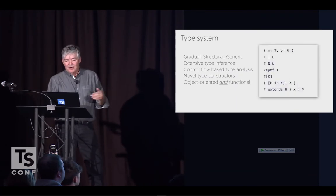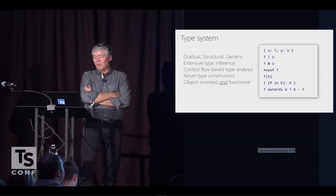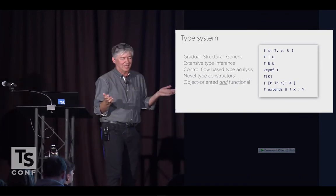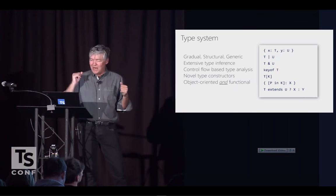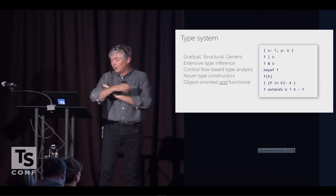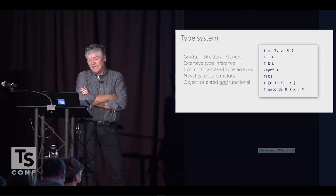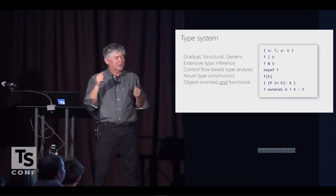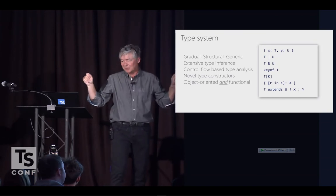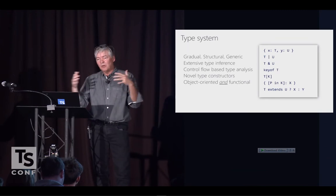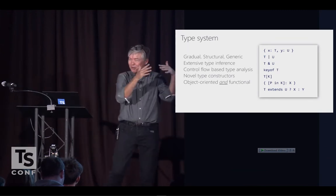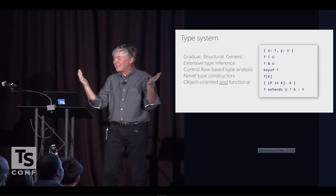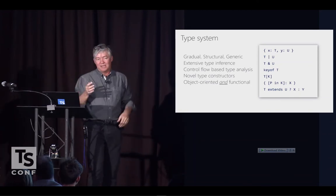Speaking about the novel type constructors: originally TypeScript was just a bunch of primitive types, and then you could declare object types and function types — and that was it. Then we gradually grew: unit types, union types were added, then intersection types. Those fundamentally change how you think about types, because now every group type is not just a single type — it's a set of disjoint possible types. That brings a whole different way of thinking, much closer to how JavaScript actually works.